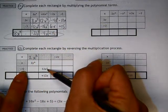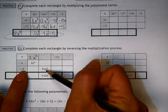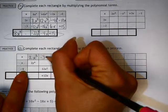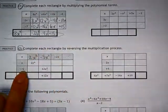I also see this one here that I can do. This times something has to give me this one here. So that would be negative 3x squared times that would give me that.